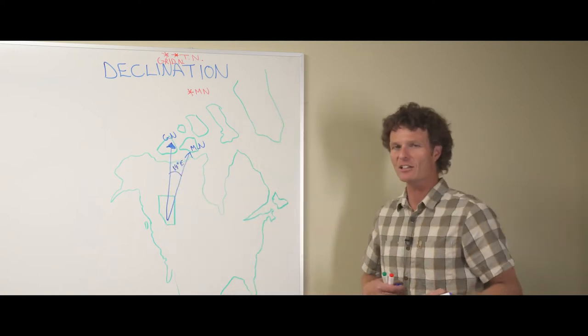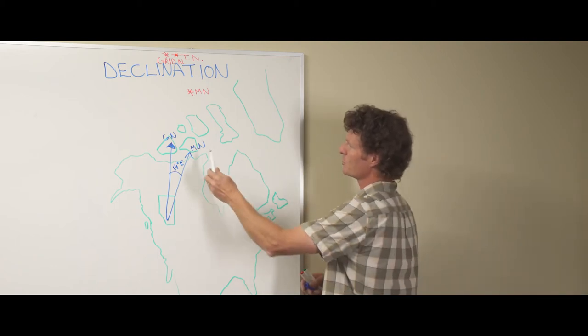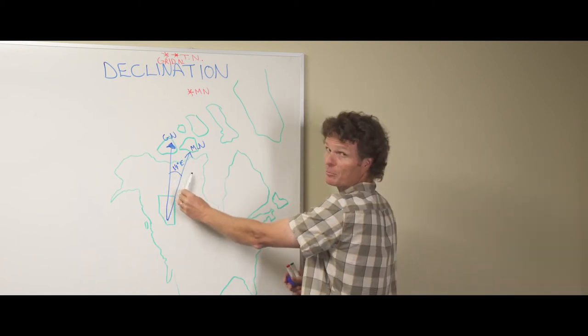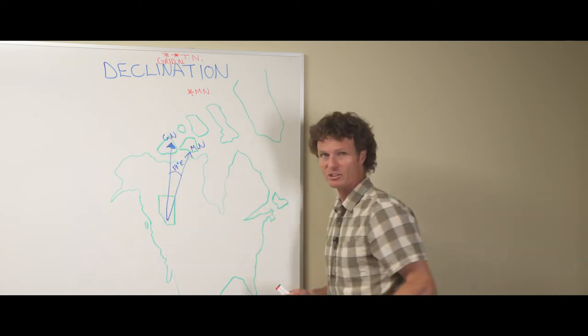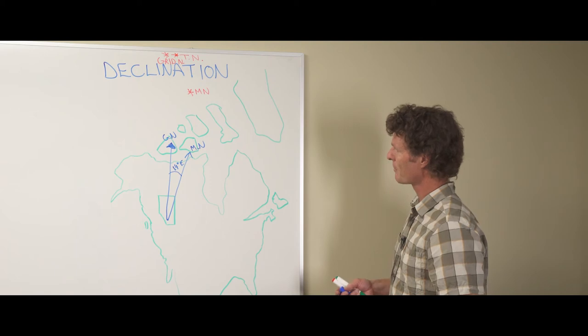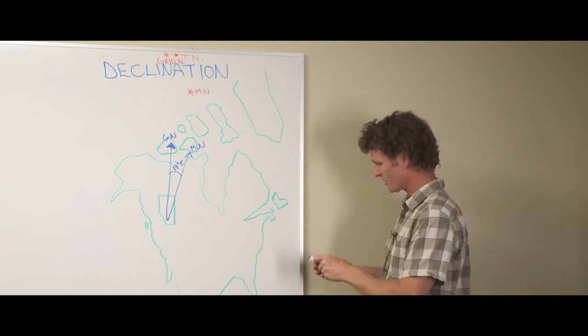So that's the declination of the difference between where a magnetic compass points and where a map will actually be oriented to. Now let's just look at another scenario.